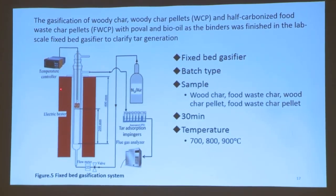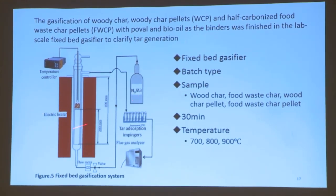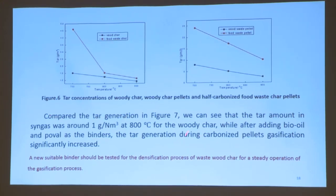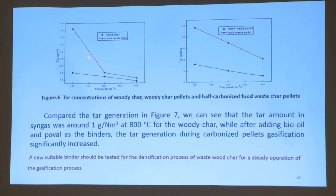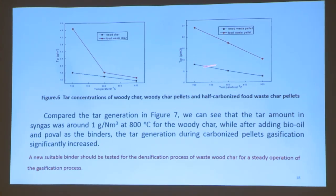As mentioned, tar generation is still a challenge for long-term operation. We also did some lab tests to characterize tar generation. The samples used were wood char, food waste char, wood char pellet, and food waste char pellet — the two pellets used bio-oil as a binder. Temperature ranged from 700 to 900 degrees C with a holding time of 30 minutes. The food waste char presented a higher tar concentration. After densification, tar generation increased greatly for both feedstocks. This means a new suitable binder should be tested for the densification process to enable stable operation — finding an alternative binder is part of our next planning.